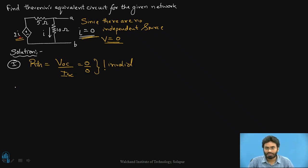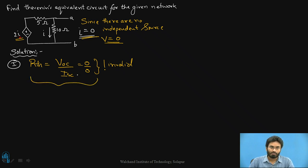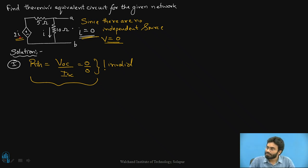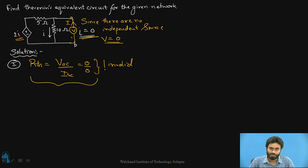So how do we tackle this kind of problem? Since there is no independent source, voltage and current both are 0, but that doesn't mean the value of R is also going to be 0. So calculating RTH by depending on VOC and ISC in the absence of an independent source is an improper method. What we can do instead is externally connect a voltage source, which will make some current I pass through the circuit.